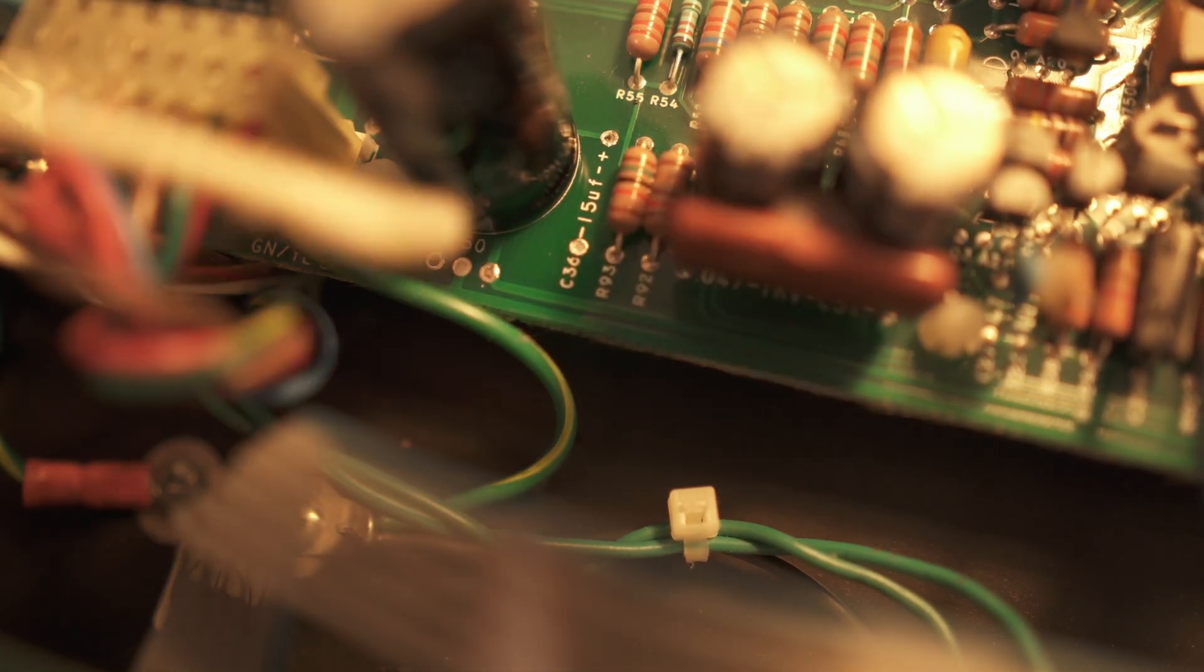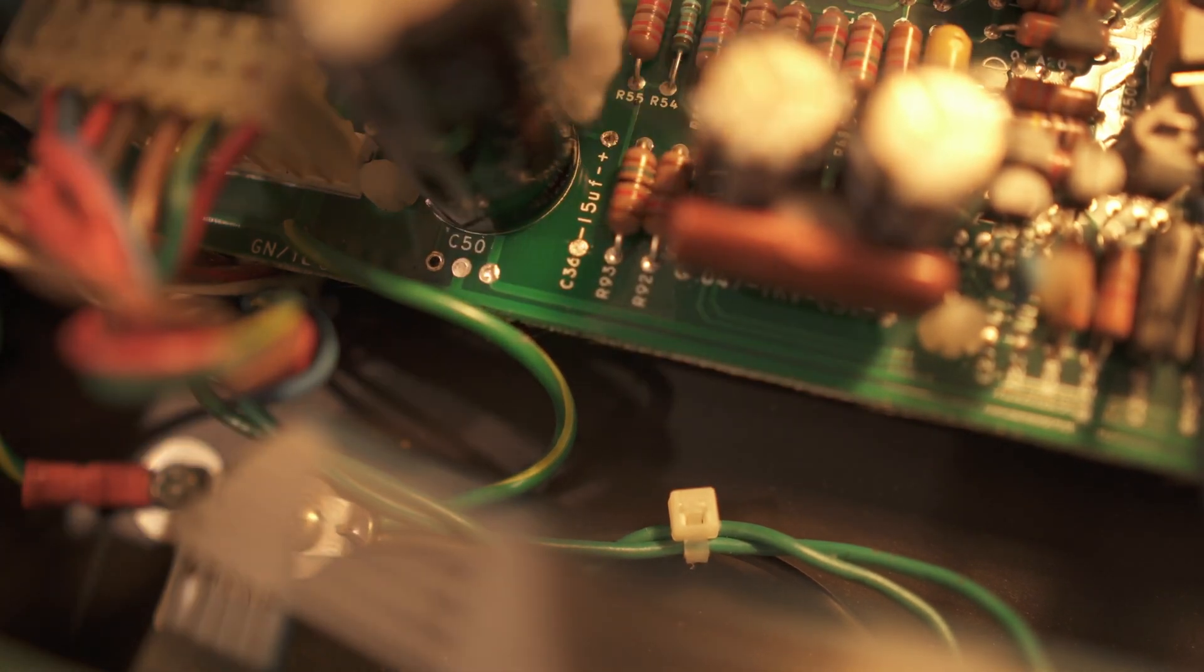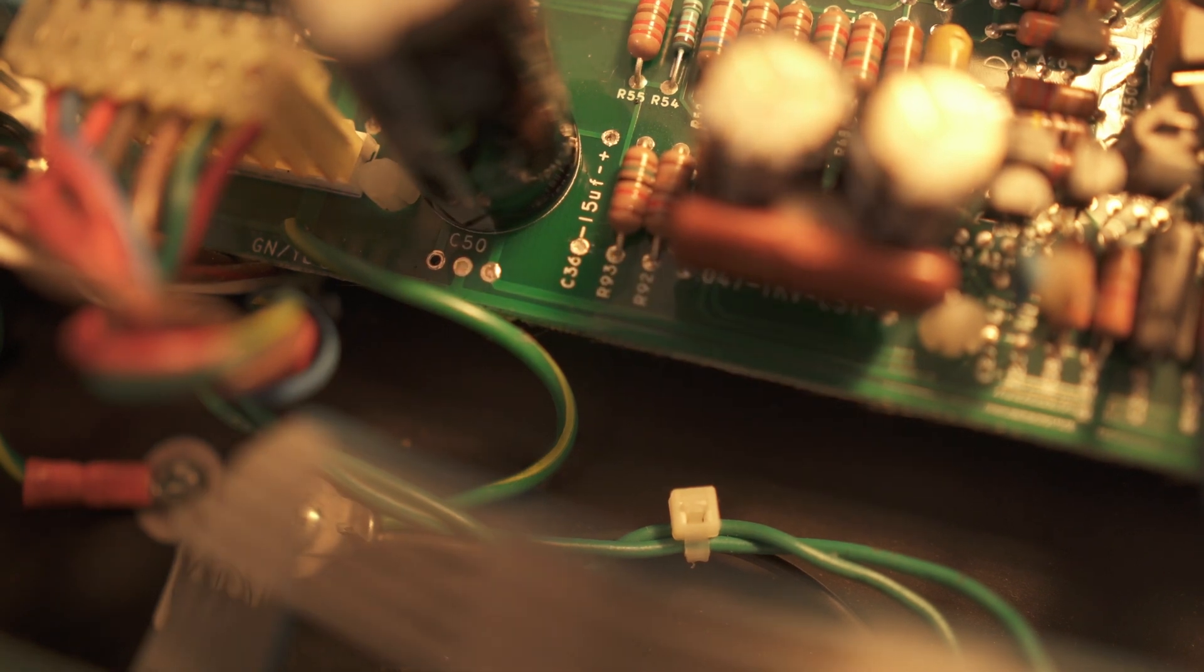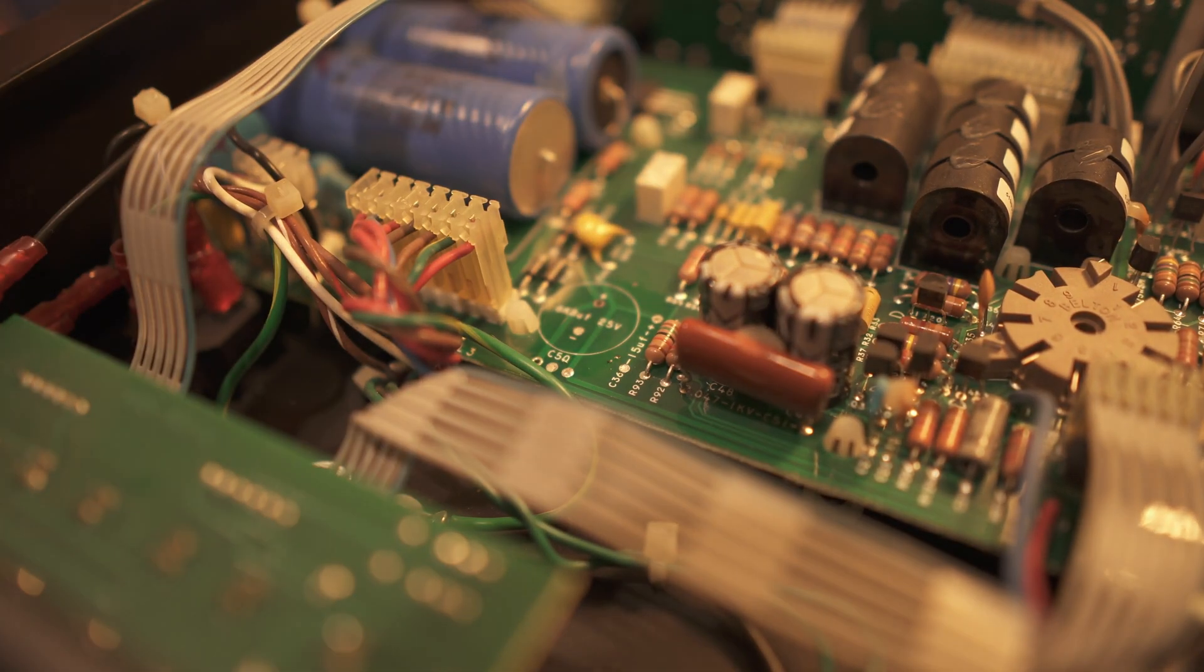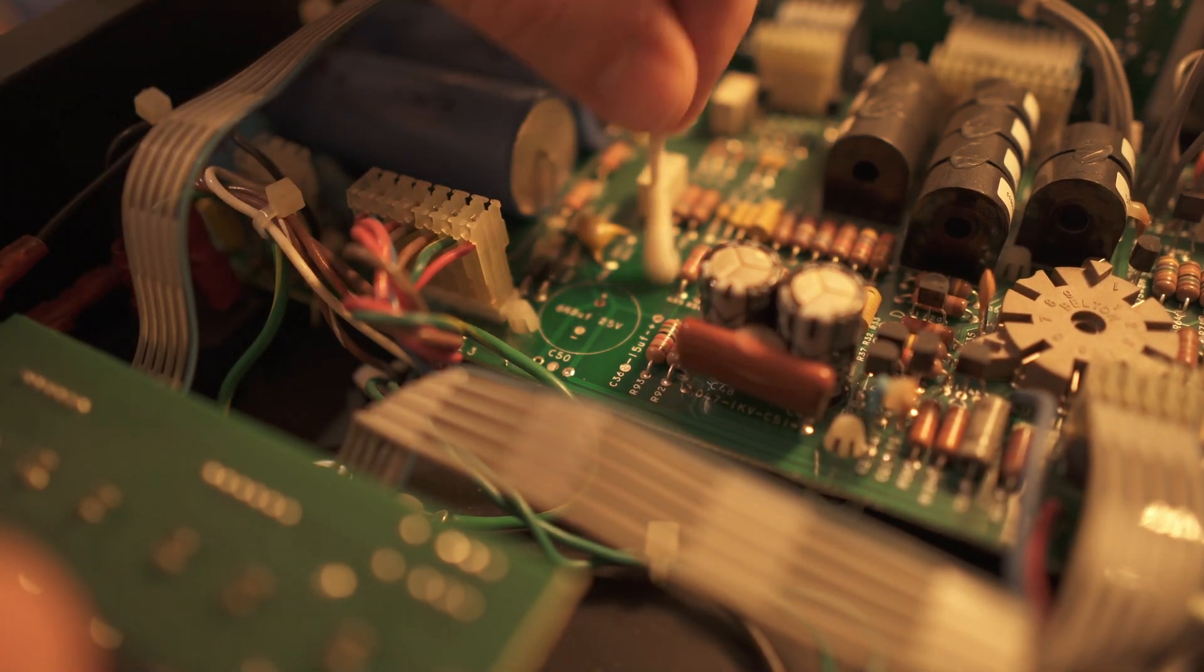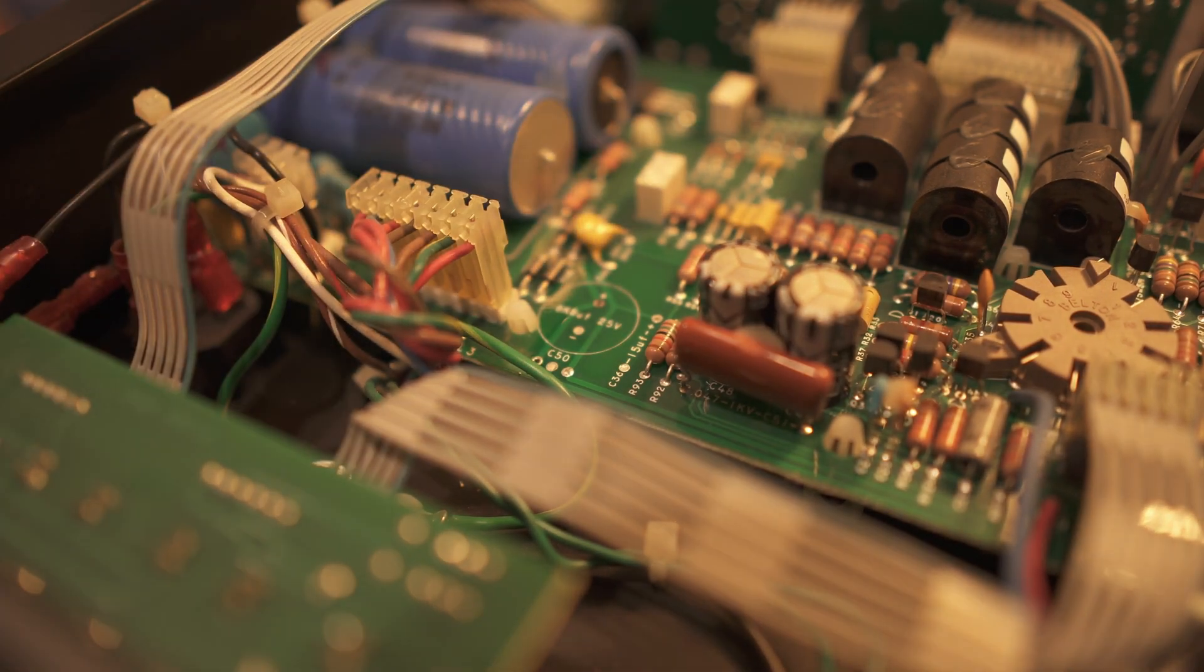So I'm first going to take that component out. I'm going to clean the area, desolder everything. And what I really want to do is not just replace that component, but everything in that sub-circuit. In this case, I am going to remove C50 and the linear voltage regulator. So we're going to replace those three components so that we have a healthy 12-volt heater supply.